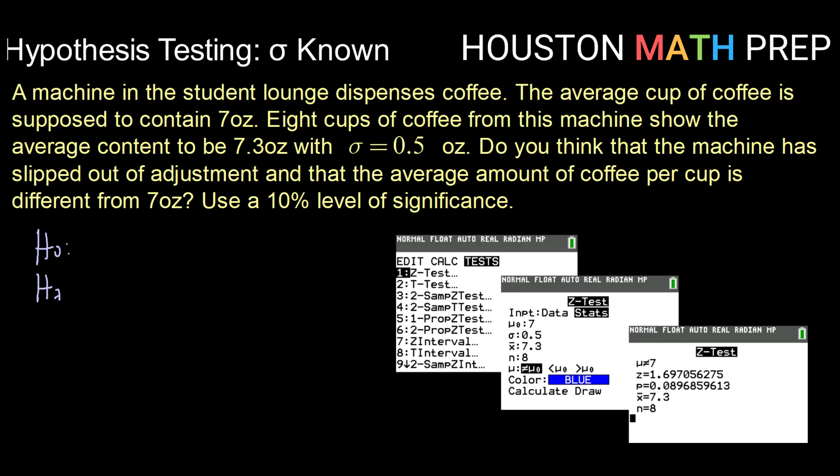So again, before we can perform any hypothesis test, we have to have an alternative and null hypothesis. So our mu is equal to seven ounces would be our null hypothesis. And here we're saying, are we different than seven? So that would be a not equal to alternative hypothesis. So again, if we're using technology here, going into our stat menu, going over to tests and selecting option one for z-test, make sure that you're on the stats menu there, and then enter in your information. Mu sub 0 is whatever you have in your null hypothesis, in this case 7.